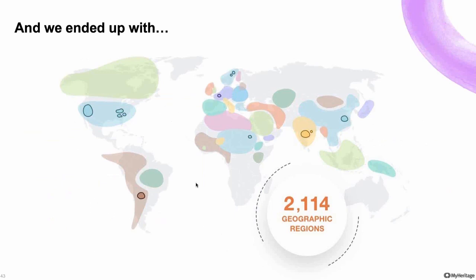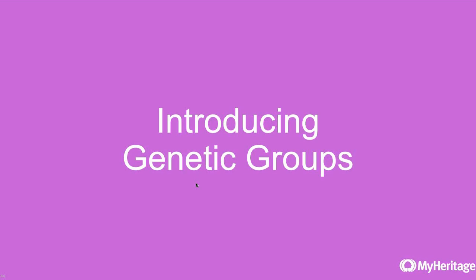That's the work we did — years of effort. The algorithms aggregate the data to a point, but much of it — if not all — was manually reviewed by us to ensure accuracy, with most of that manual review done by our Senior Vice President of Product Management, Uri Gonen. After working through the initial thousands of groups from the algorithm, we ended up with 2,114 unique geographic regions or genetic groups, each with something unique that differentiates it from the others. Now let's look at how this appears on MyHeritage.